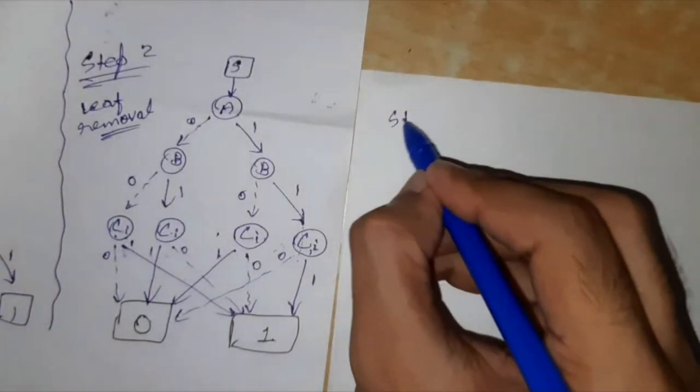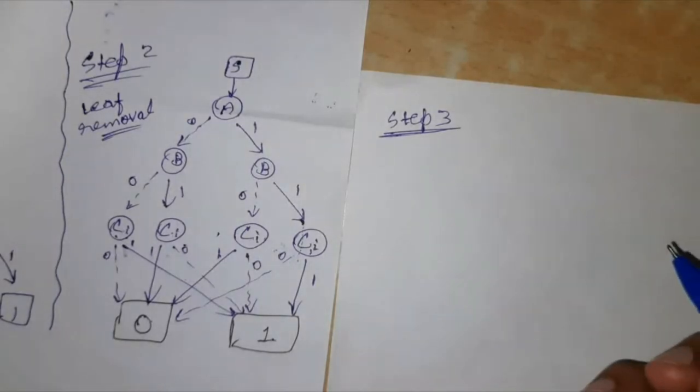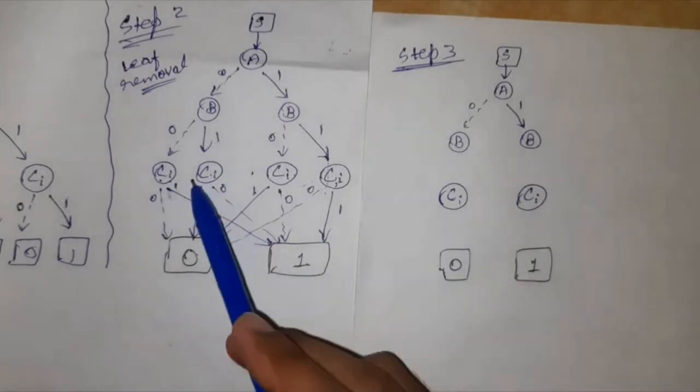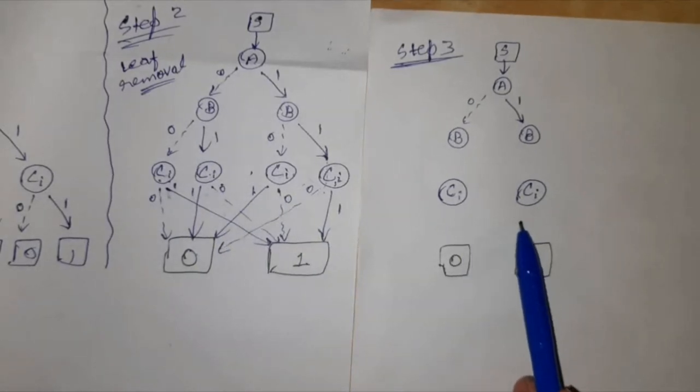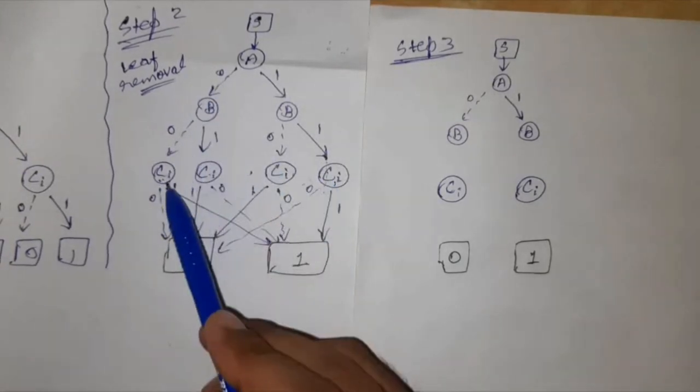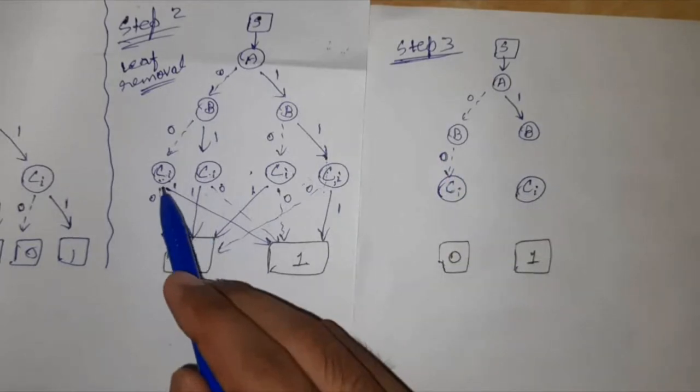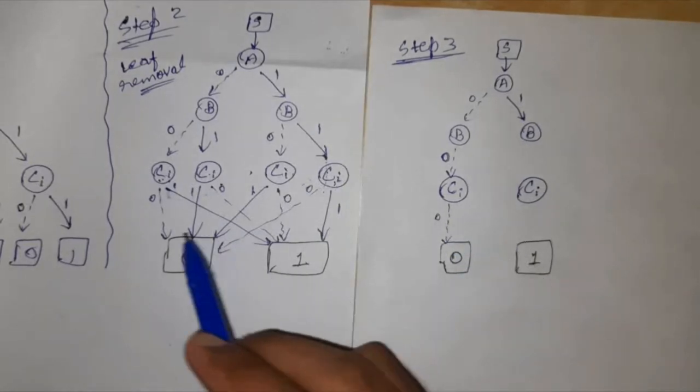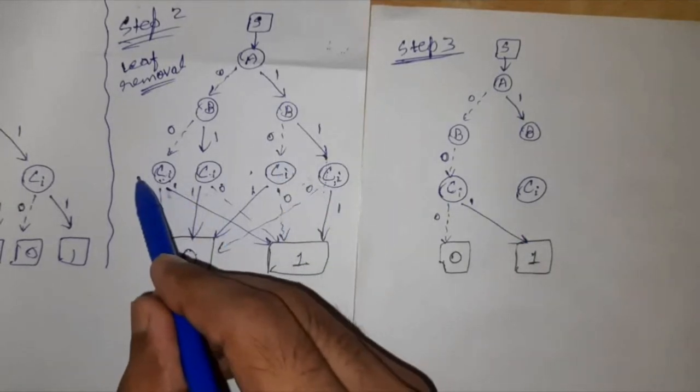So we are reducing the total number of nodes in this diagram by 2. So I shall just quickly again draw the step 3 where we are removing the nodes. Okay, so I have drawn this diagram for step 3 and you can see that in place of these 4 CI nodes we are left with just the 2 CI nodes. So what we will do now for this 1st and 4th node? For condition 0 we are arriving at this CI, and this CI is for 0 it is 0 and for 1 this is 1. And this node is solved.